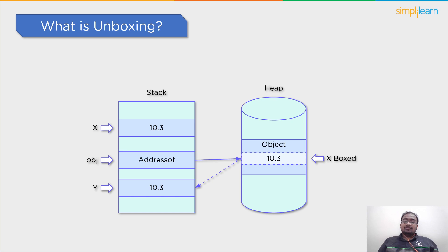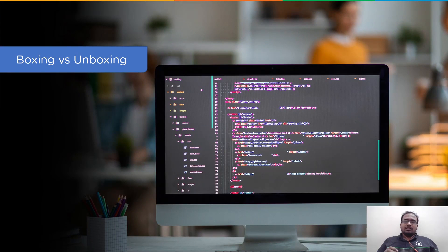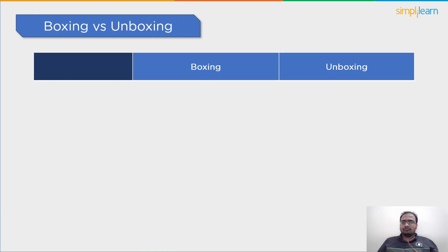Finally, an unboxing operation involves first determining if the object instance is a boxed value of the specified value type and then duplicating the value from the instance. Now that we have a good grasp on concepts like boxing and unboxing, let's have a discussion on the difference between them.